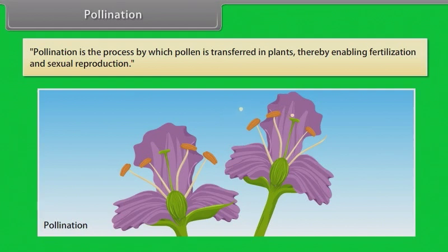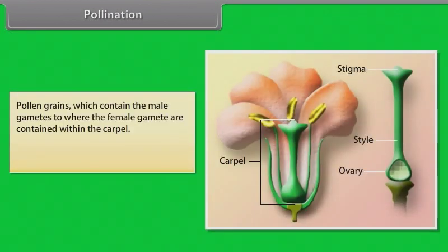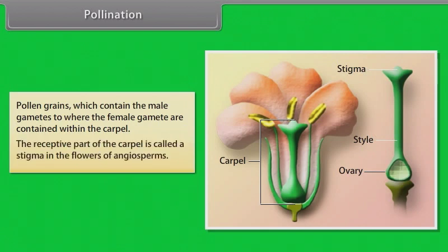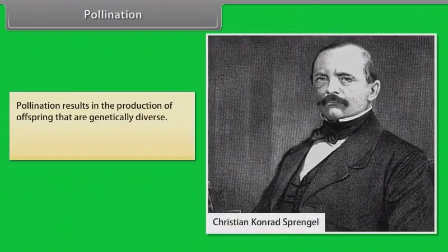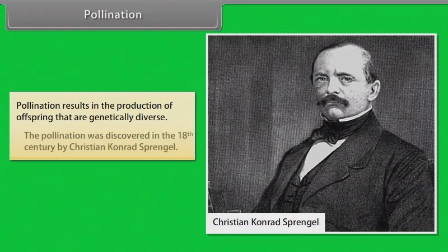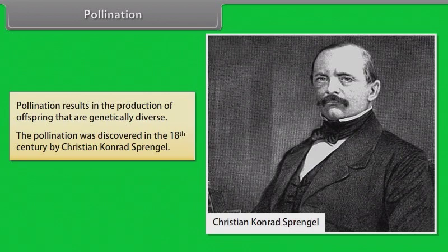Pollination is the process by which pollen is transferred in plants, thereby enabling fertilization and sexual reproduction. Pollen grains, which contain the male gametes, are transferred to where the female gamete are contained within the carpel. The receptive part of the carpel is called a stigma in the flowers of angiosperms. Pollination results in the production of offspring that are genetically diverse. Pollination was discovered in the 18th century by Christian Conrad Sprengel.